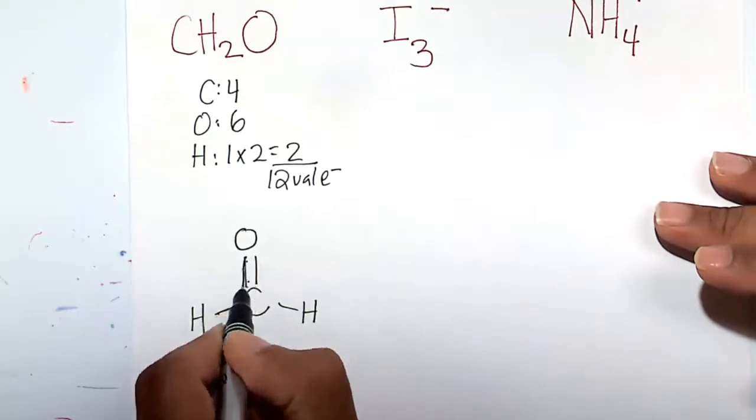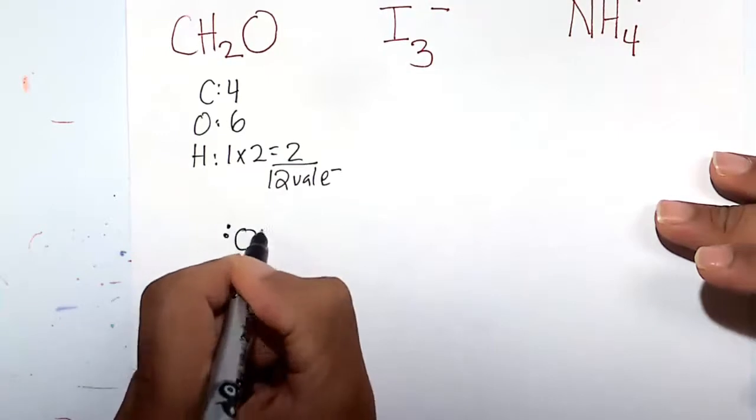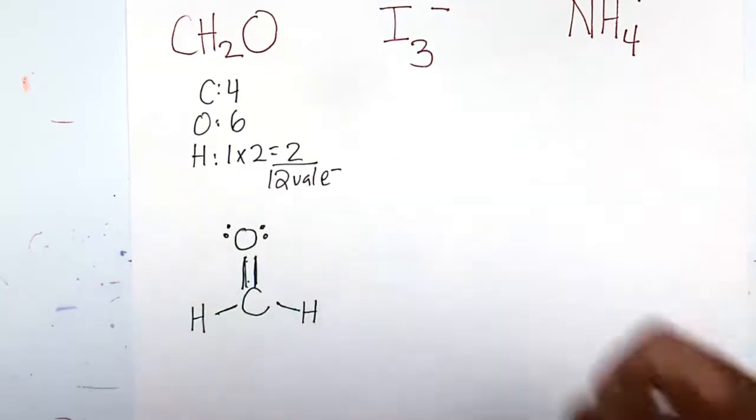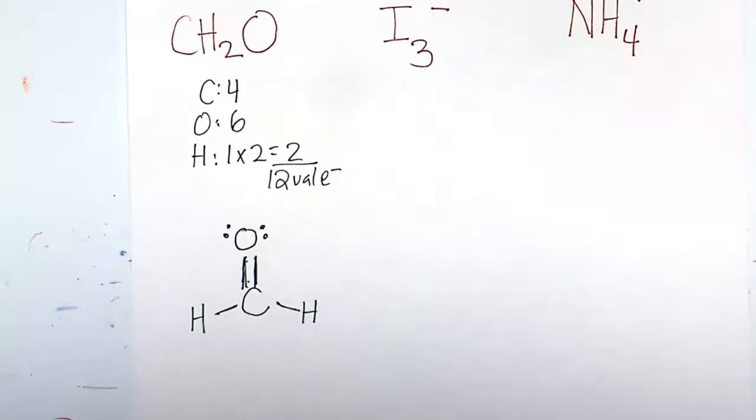So 1, 2, 3, 4, 5, 6, 7, 8, let's do 9, 10, 11, 12. Let's put our remaining electrons on the oxygen atom, because it can accommodate it. Remember, oxygen loves 6.